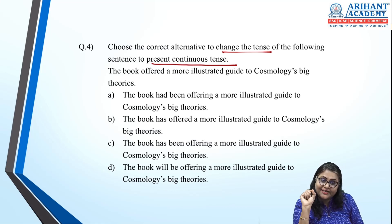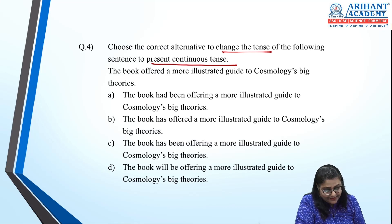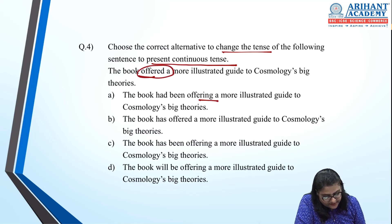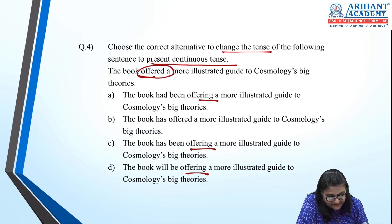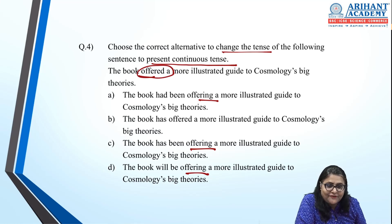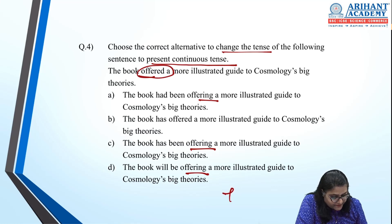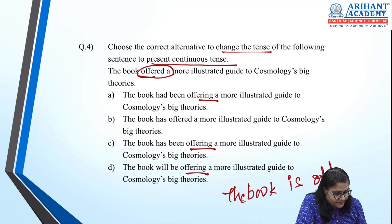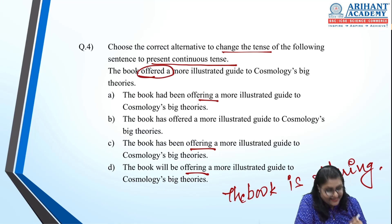Next: change to present continuous — need '-ing' with is/am/are. The sentence is 'the book offered.' Looking through the options, none give a correct present continuous with is/am/are plus '-ing.' The correct answer — 'the book is offering' — is the right form. Next: change to future perfect continuous — 'was learning' is past continuous. Future perfect continuous requires 'will have been' plus '-ing'. Option B 'he will have been learning' is correct.